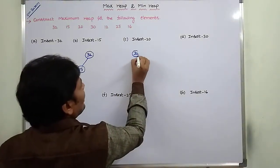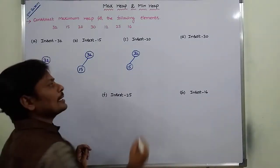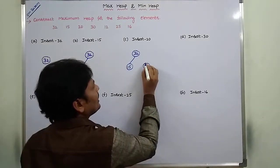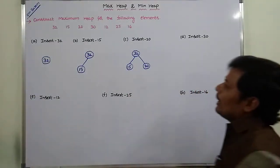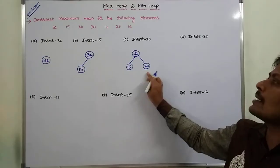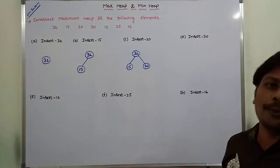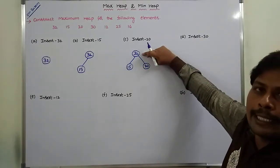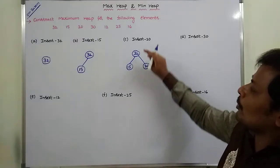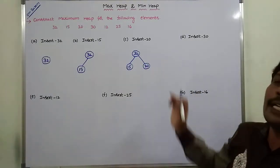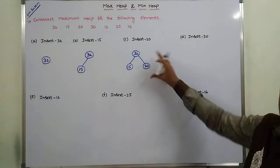Next, we have to insert element 20. So 20 can be inserted as a right child of 32. Now, 15 and 20 are children of 32, so 32 is the parent of 15 and 20. The parent node's value 32 is greater than its children's values 15 and 20. It satisfies the maximum heap property, so it is a maximum heap.